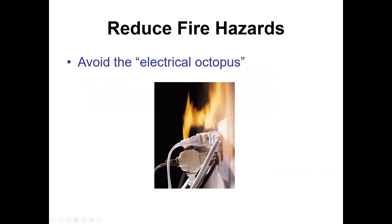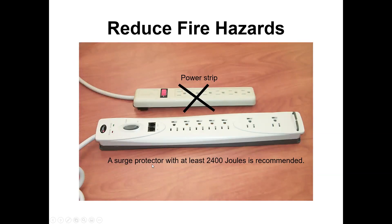Avoid the electrical octopus — plugging many appliances into one circuit is dangerous. Most household circuits are 15 or 20 amps; think about how many amps you're drawing if everything is running at once. If you use a power strip, use one with a surge protector — at least 2,400 joules — to protect against lightning strikes or power surges. A plain power strip without a circuit breaker offers no protection.